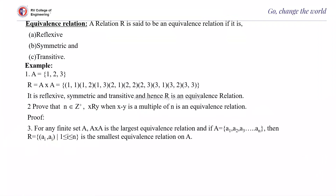Let us start with the next topic: equivalence relation. A relation R is said to be an equivalence relation if it is reflexive, symmetric, and transitive. In the previous videos, we have seen what is a reflexive relation, what is a symmetric relation, and transitive relation. If a relation satisfies all these three properties, then we call it an equivalence relation.